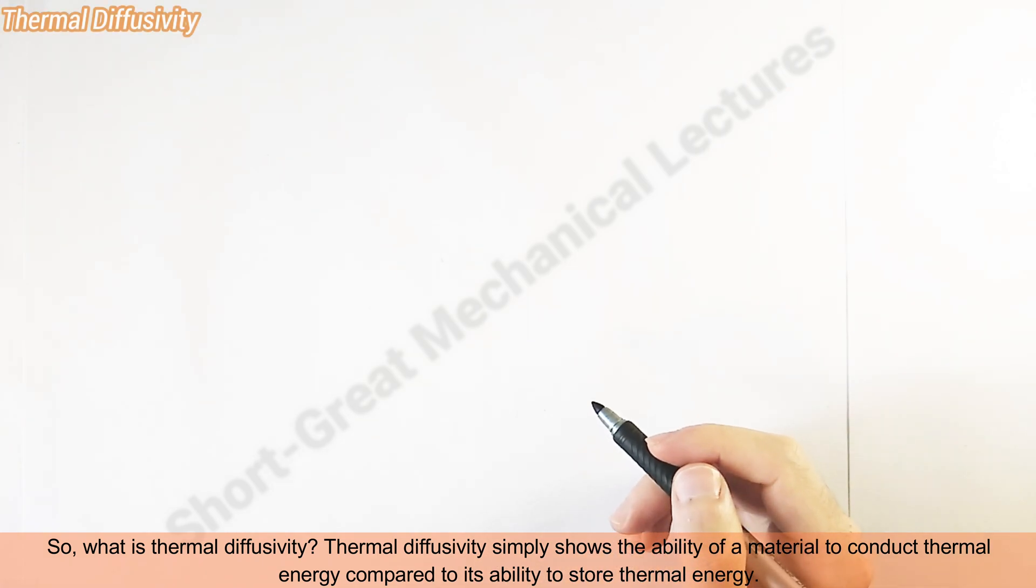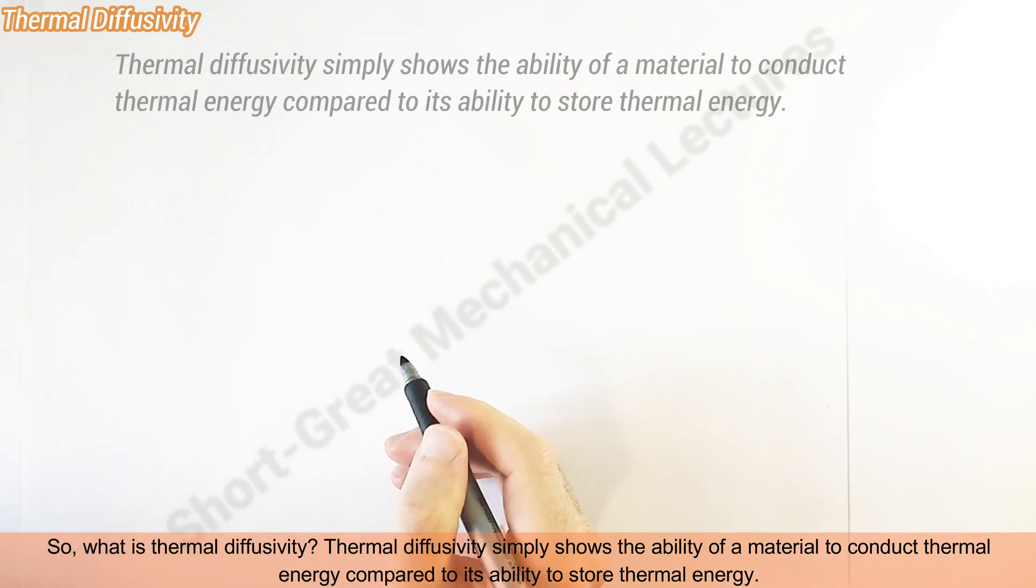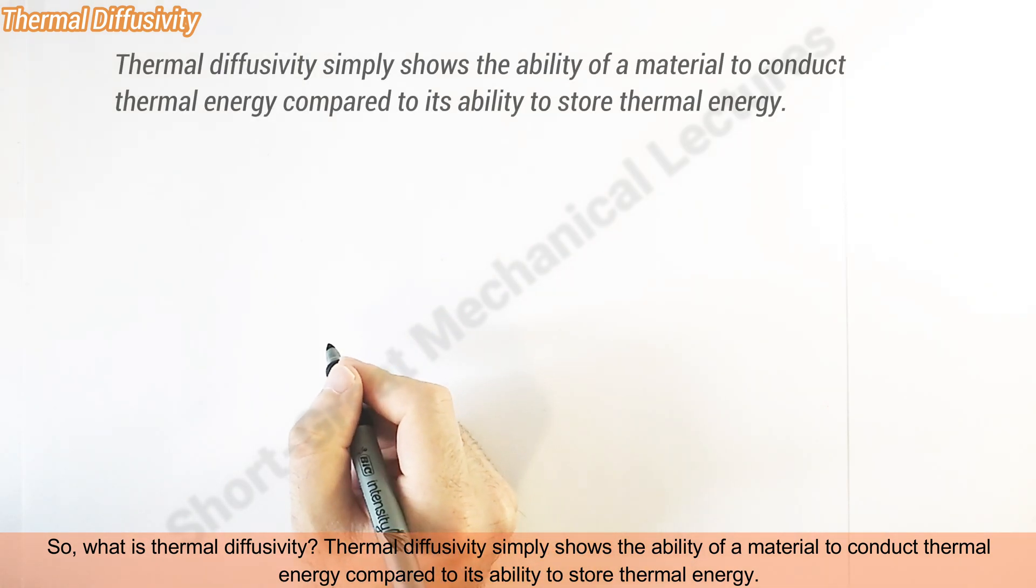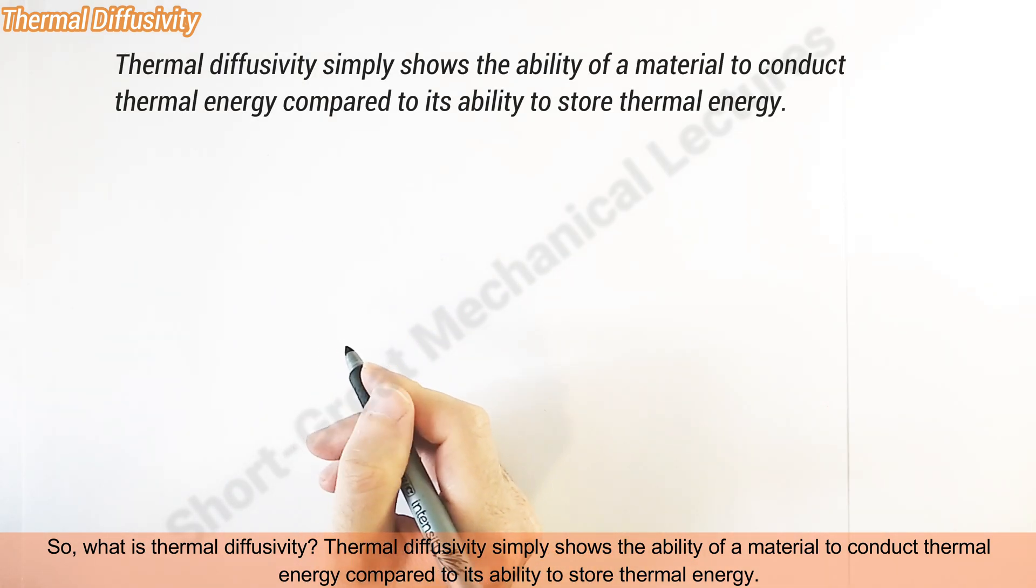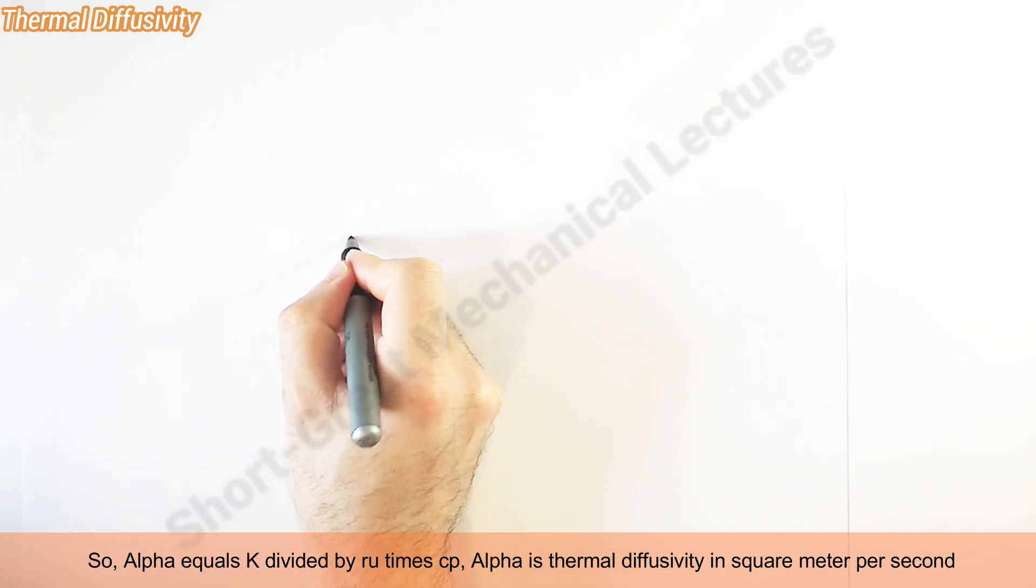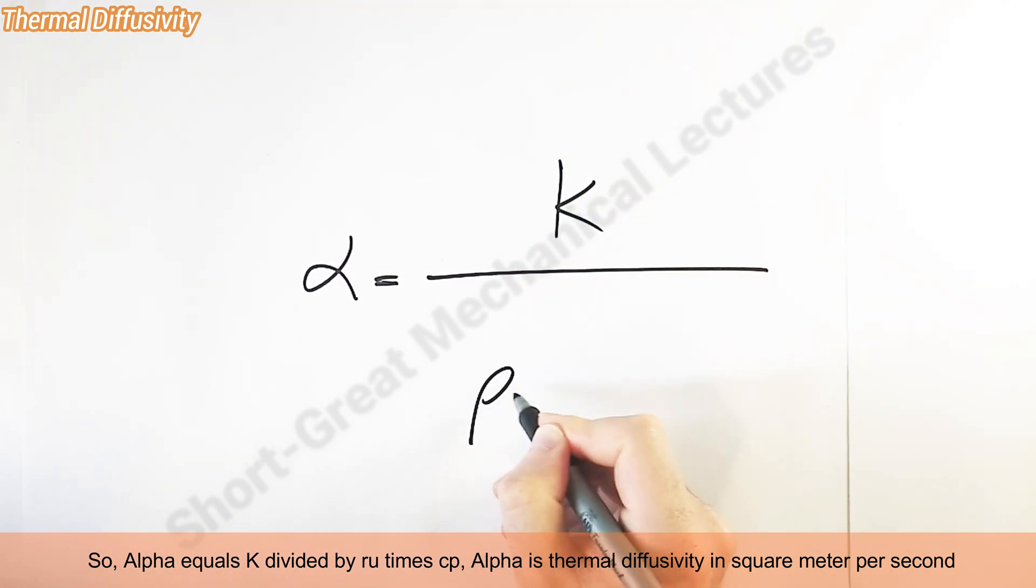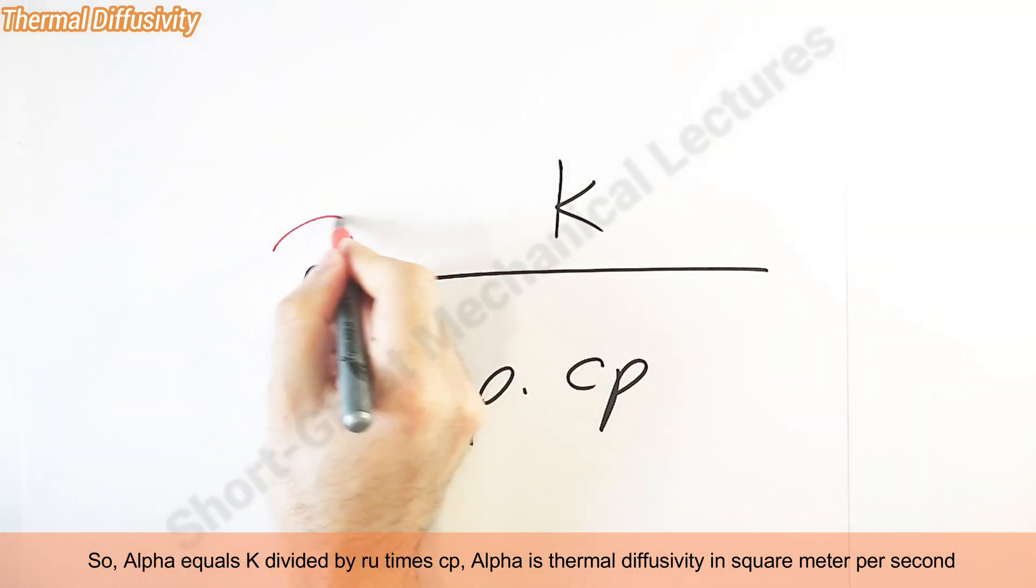So what is thermal diffusivity? Thermal diffusivity simply shows the ability of a material to conduct thermal energy compared to its ability to store thermal energy. So alpha equals k divided by rho times cp. Alpha is thermal diffusivity in square meters per second.